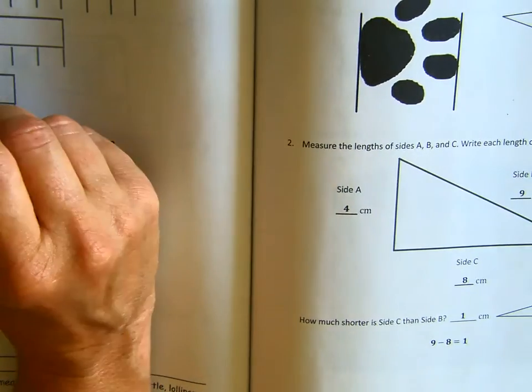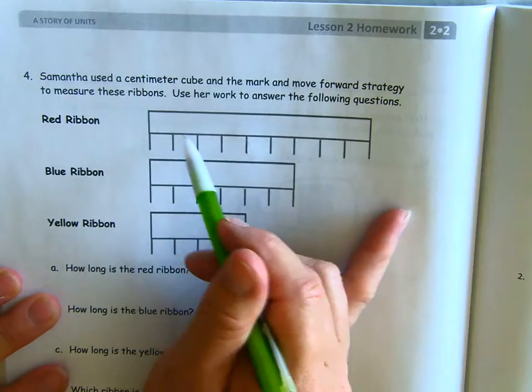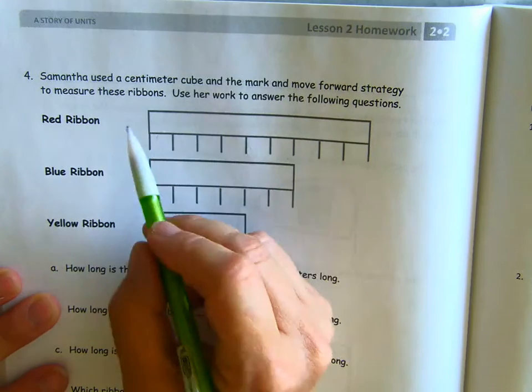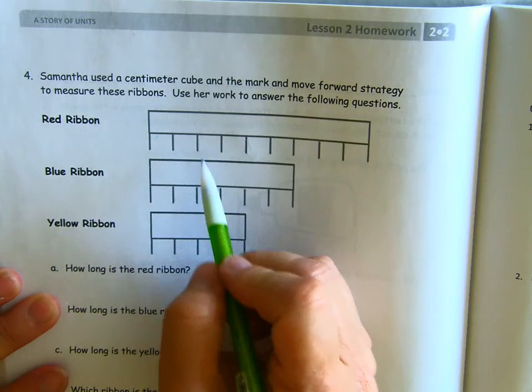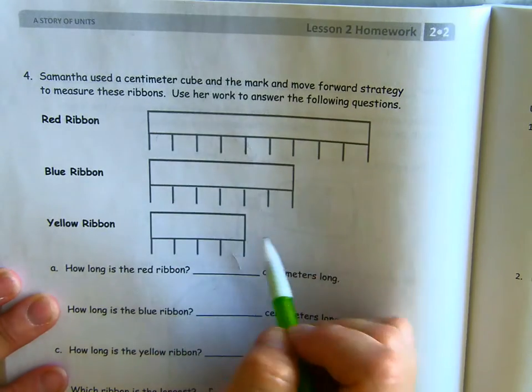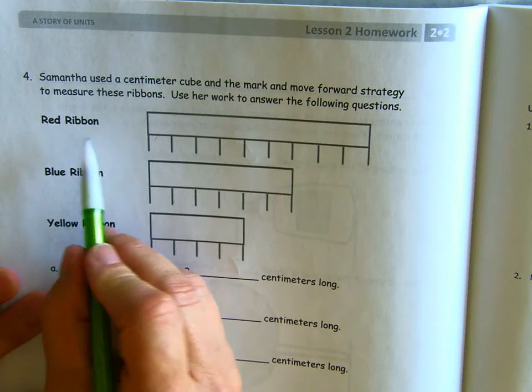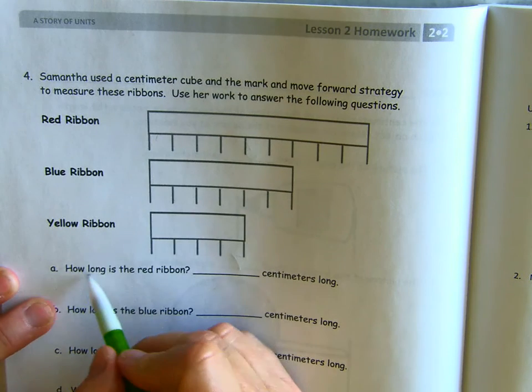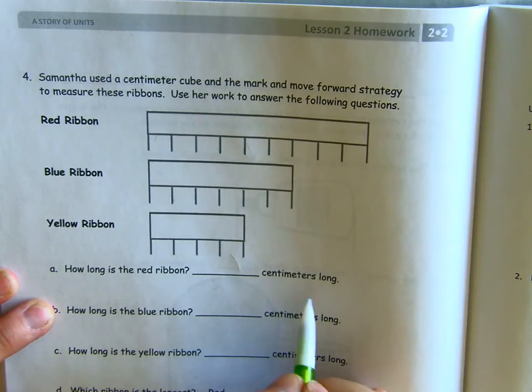So, here we have someone who has done the measuring with their centimeter cube like we did. All right. She's used her cube and she's measured along these ribbons. And we're going to use this picture to answer these questions. So, the red ribbon, the blue ribbon, and the yellow ribbon. How long is the red ribbon? Blank centimeters long.